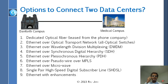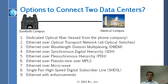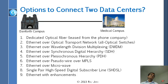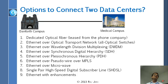Some of the new options are MPLS, pseudowire over MPLS, microwave, and then DSL. That is what we can afford actually — maybe DSL. If you have a small business, maybe you can get a DSL here and DSL there and you are connected. But DSL is not really going to give you much speed.